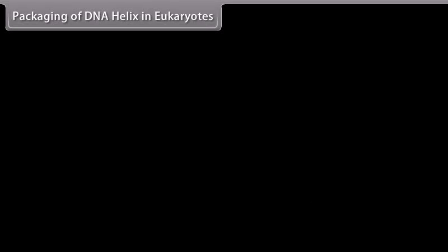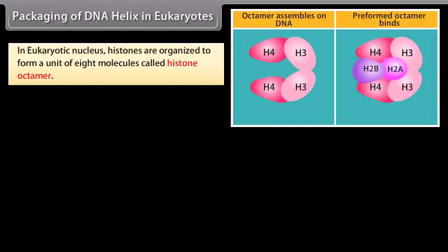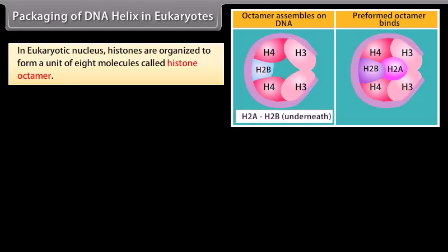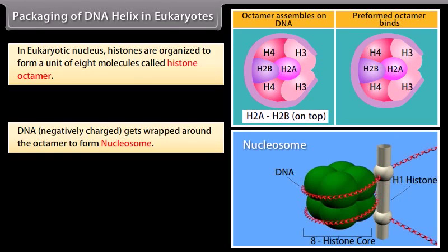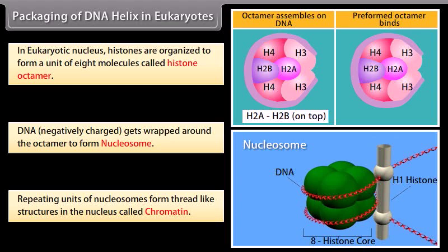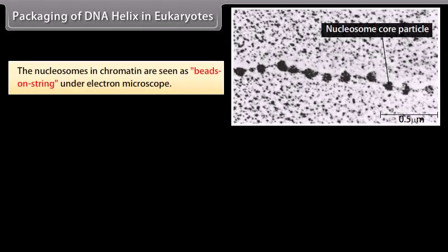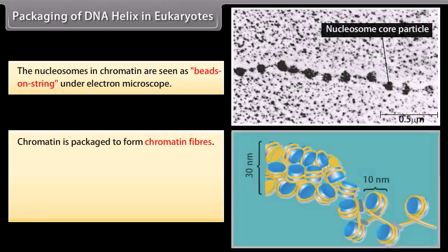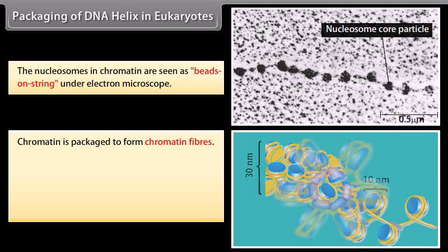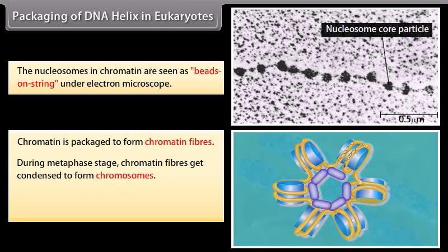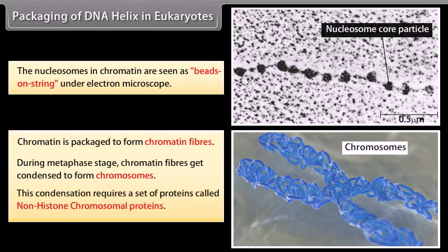In eukaryotic nucleus, histones are organized to form a unit of 8 molecules called a histone octamer. DNA, being negatively charged, gets wrapped around the octamer to form a nucleosome. Repeating units of nucleosomes form thread-like structures in the nucleus called chromatin. The nucleosomes in chromatin are seen as beads on a string under an electron microscope. Chromatin is packaged to form chromatin fibers. During metaphase, chromatin fibers get condensed to form chromosomes. This condensation requires a set of proteins called non-histone chromosomal proteins.